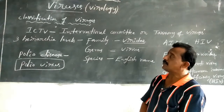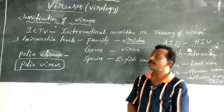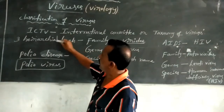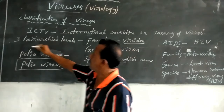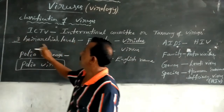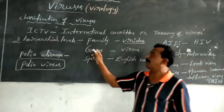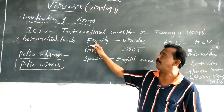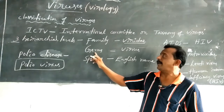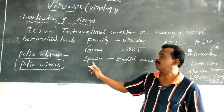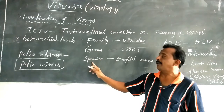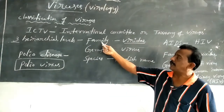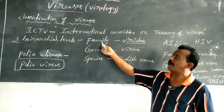In this ICTV system, there are three hierarchical levels. Those three hierarchical levels are: first hierarchical level — Family; second hierarchical level — Genus; third hierarchical level — Species.